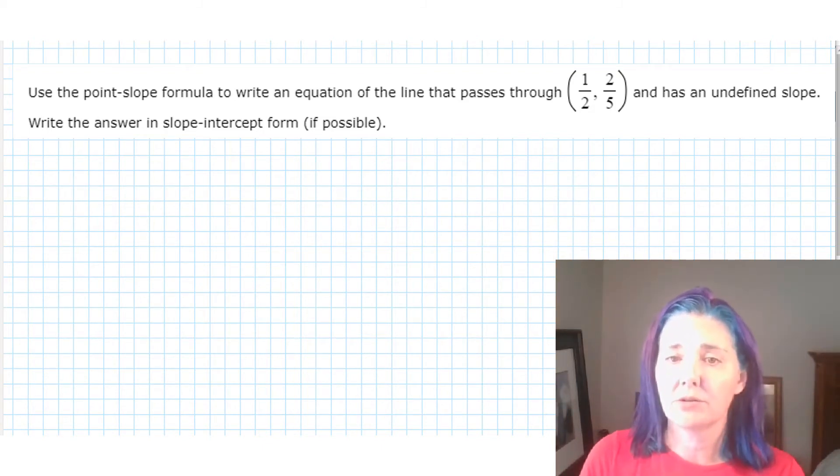The question says, use the point-slope formula to write an equation of the line that passes through the point one-half comma two-fifths and has undefined slope. Write the answer in slope-intercept form if possible.